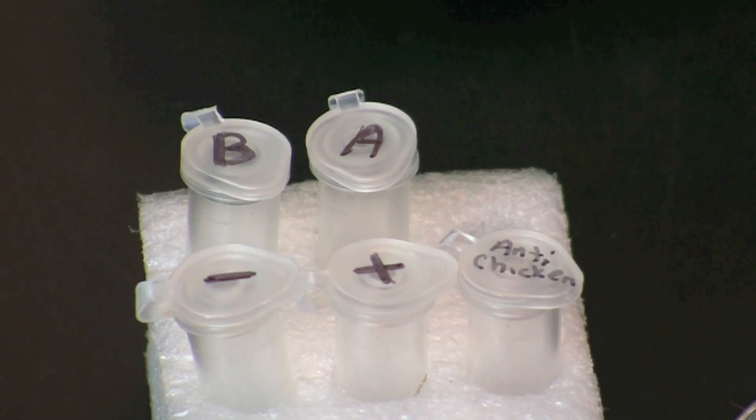For this activity we will be using 20 microliters each of test sample A, test sample B, positive control which is chicken serum, negative control which is phosphate buffered saline or PBS, and anti-chicken which contains an antibody against chicken yolk.